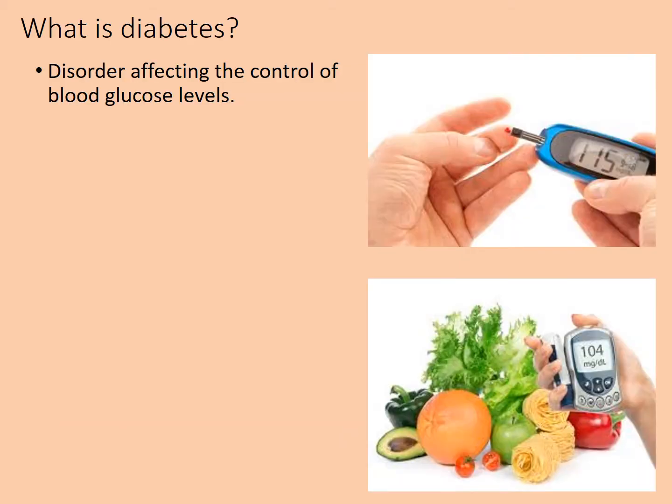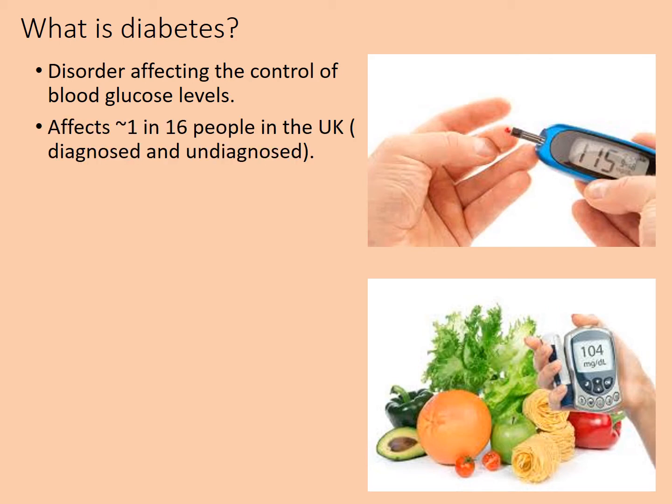Diabetes is about when that control of blood glucose level goes wrong, linked to the functioning of insulin. It means you are unable to control your blood glucose levels. Roughly 1 in 16 people in the UK suffer from diabetes — both type 1 and type 2.